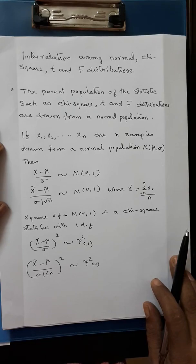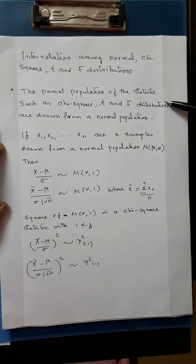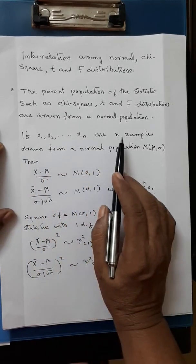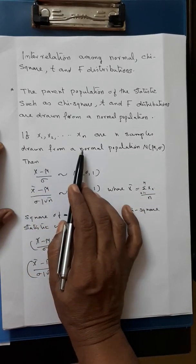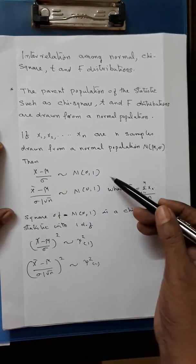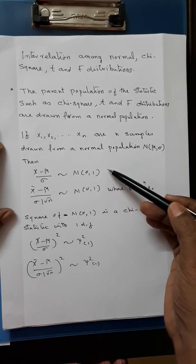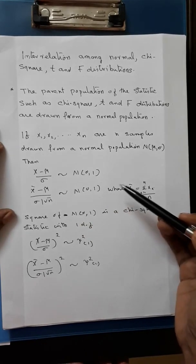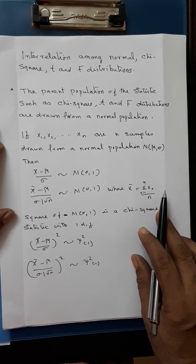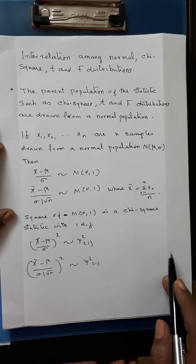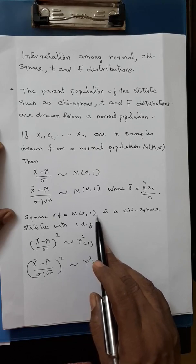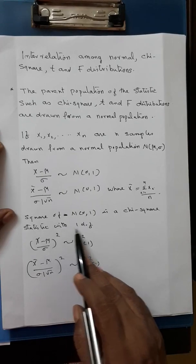The parent population of a statistic such as chi-square, t, and f distributions are drawn from a normal population. If x1, x2, ..., xn are n samples drawn from a normal population N(mu, sigma), then (x minus mu) by sigma follows N(0,1). Similarly, (x-bar minus mu) by (sigma by root n) follows N(0,1), that is the standard normal distribution, where x-bar equals sigma xi by n. The square of N(0,1), that is the square of a standard normal variate, is a chi-square statistic with one degree of freedom.